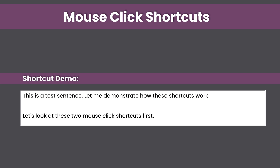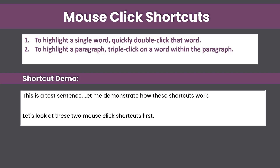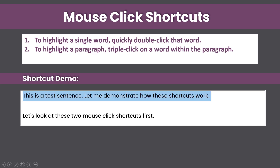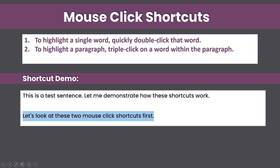First, I'm going to teach you two different mouse click shortcuts. If you want to highlight a single word, you just have to quickly double-click that word. For example, if I double-click the word 'sentence,' it will highlight that word. And if you want to highlight a paragraph, you can triple-click on a word within the paragraph — and you can see it has highlighted that full paragraph. This is really helpful if you want to erase something quickly or redo a paragraph.